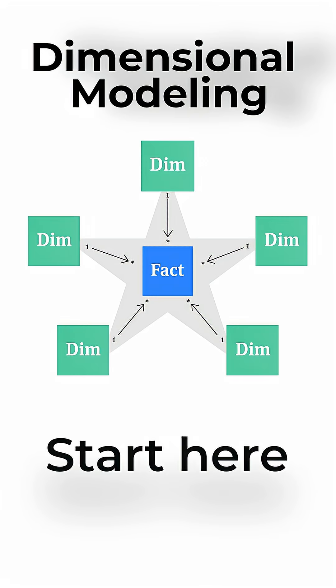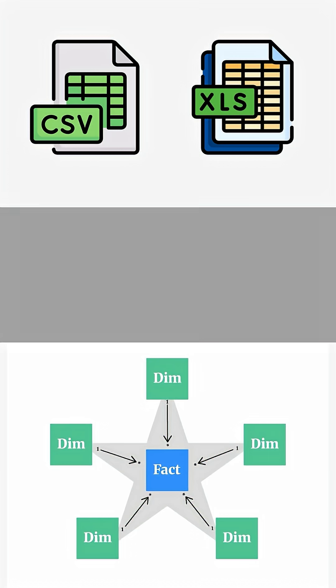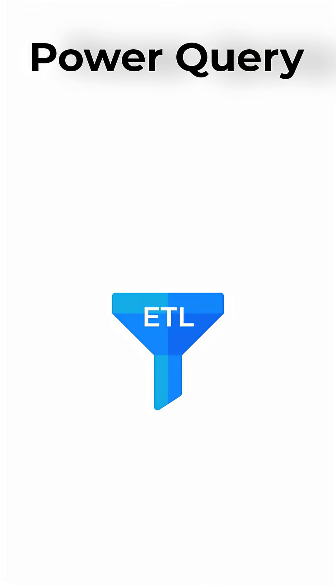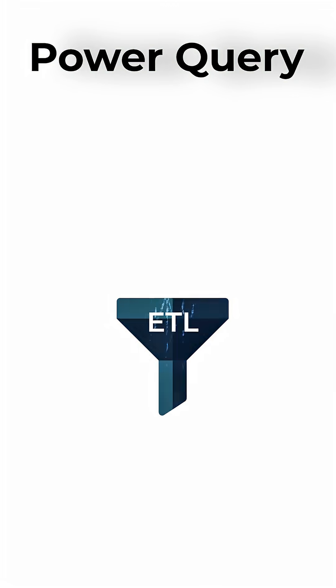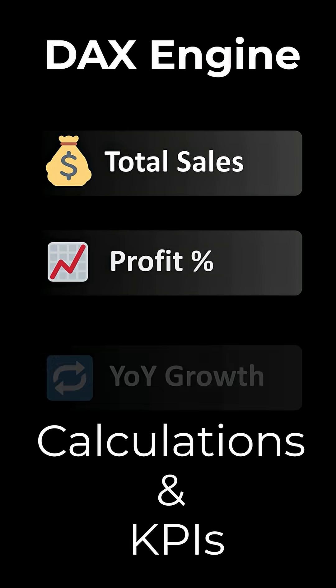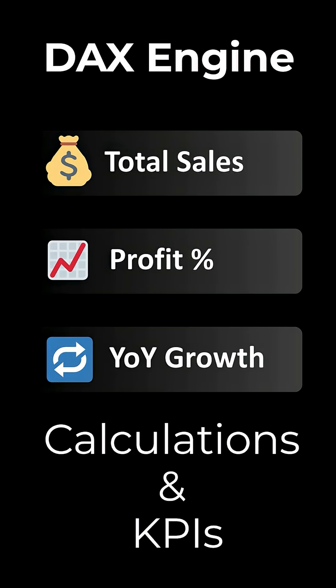The right way to learn Power BI is to learn dimensional modeling first. The data model tells you the gap between your actual data and your Power BI model. That work moves on to the second tool, which is ETL or Power Query, to shape the model and build that data model. Once you have built that data model, you move on to the next tool called the DAX engine, which is where you start writing calculations and KPIs on top of that.